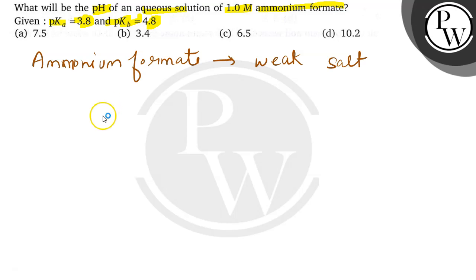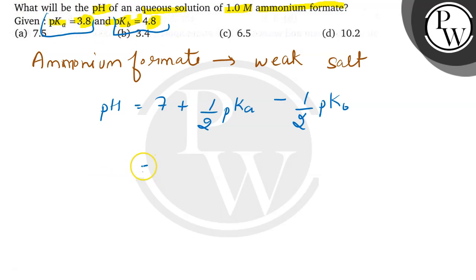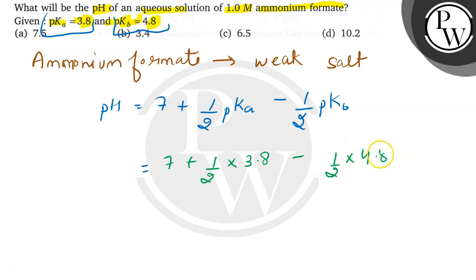So we can apply the formula: pH = 7 + (1/2)pKa − (1/2)pKb. The values of pKa and pKb are given. Substituting: pH = 7 + (1/2)(3.8) − (1/2)(4.8). Solving this, the pH comes out to be 6.5.